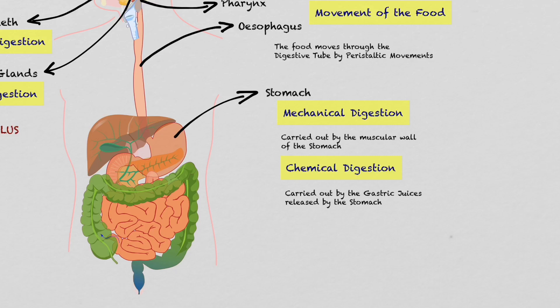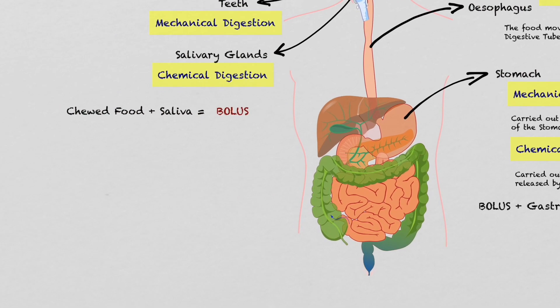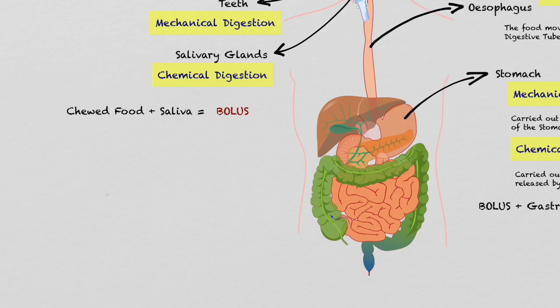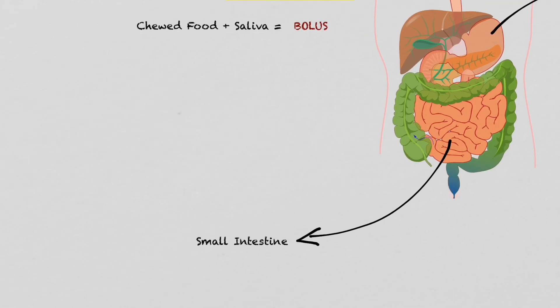The chyme is transported from the stomach to the small intestine. In the small intestine there are two extremely important processes. The first one is the chemical digestion of the food.